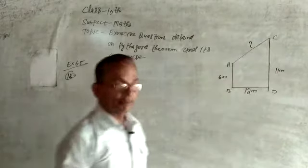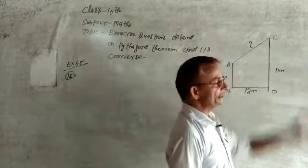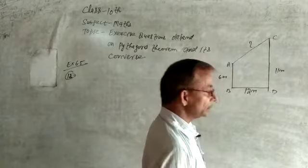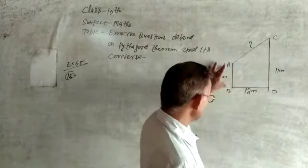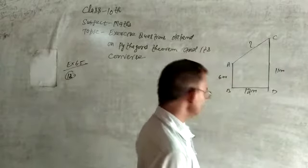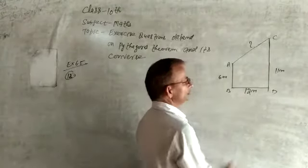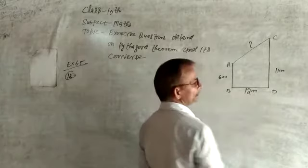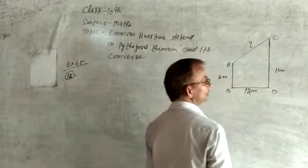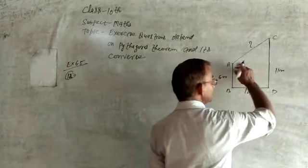In the figure, A, B and C, D are two vertical poles of height 6 meters and 11 meters respectively. The distance between their feet is 12 meters. We have to find out the distance between their tops.